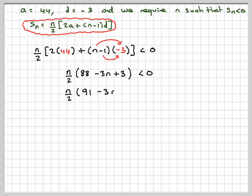So we've got two critical values in this inequality. One critical value is going to be N equals 0, and the other one will be N is equal to 91 over 3, which is what makes that bracket 0, which is 30 and a third.